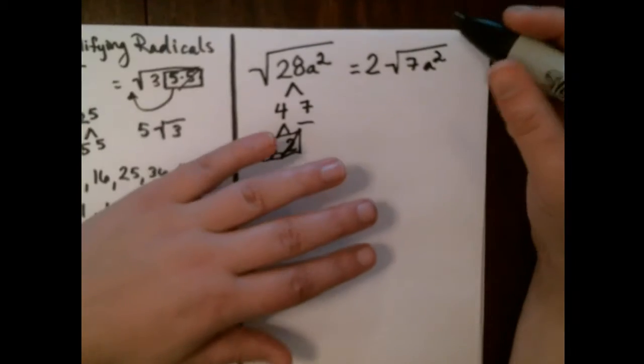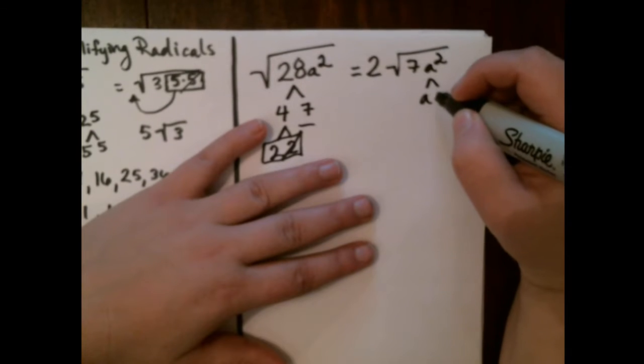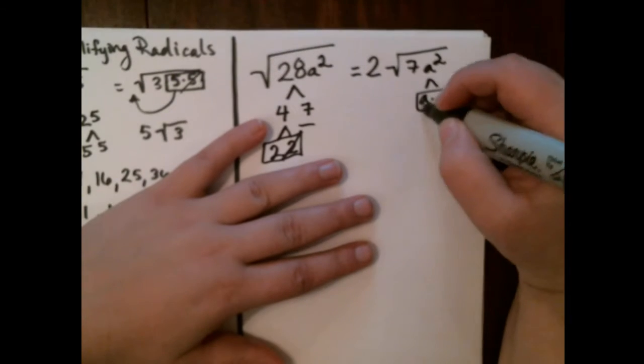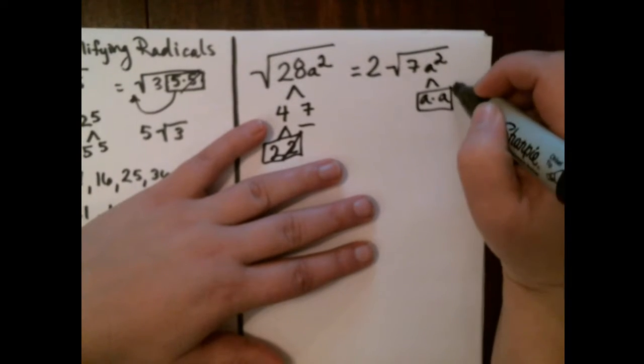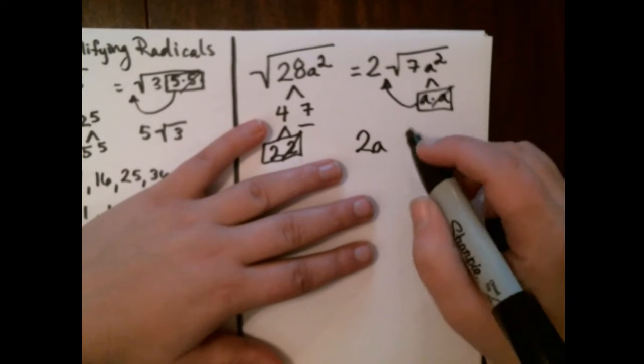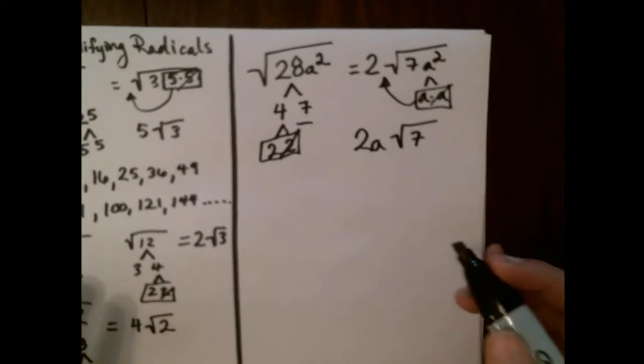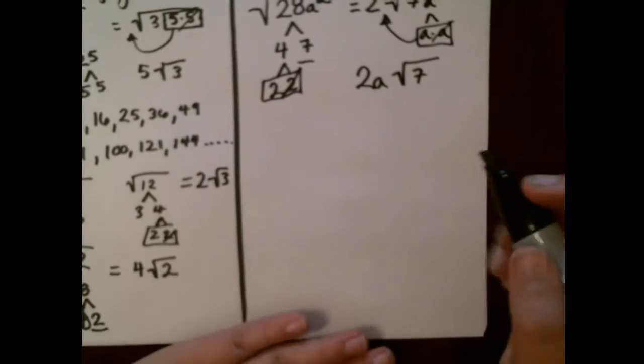And I haven't used my a² yet. I want you to really think about what a² means. It means I have an a times an a. I have a group that's exactly the same. One dies. One comes out. So I have a 2a on the outside and a square root of 7 on the inside.